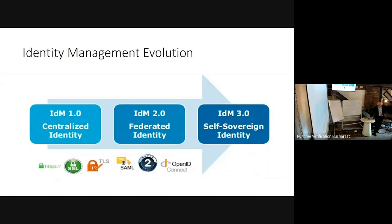The history flow can identify extremely many moments in the evolution of identity management. First, there is the level of control at the system and network level. Second, it is federated at the level of global control. And third, it is a decentralized federated system at the level of the user in Web 3.0, named self-sovereign identity.